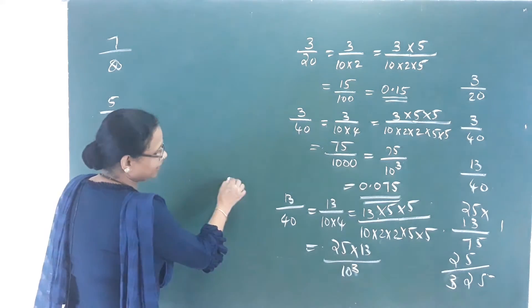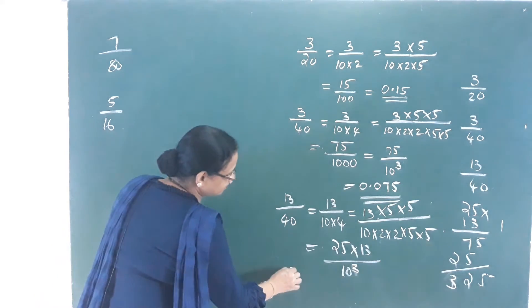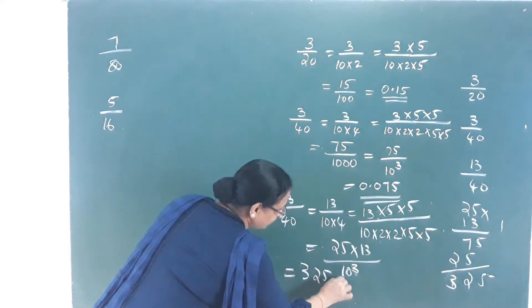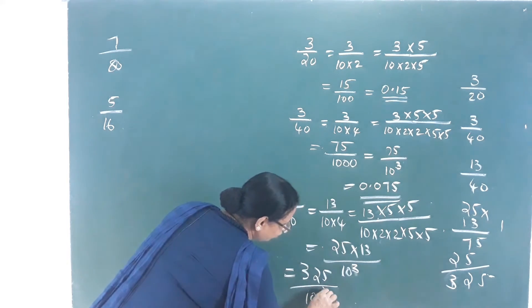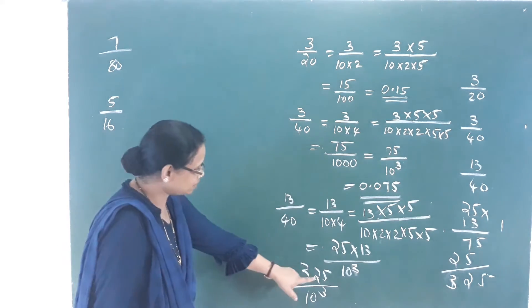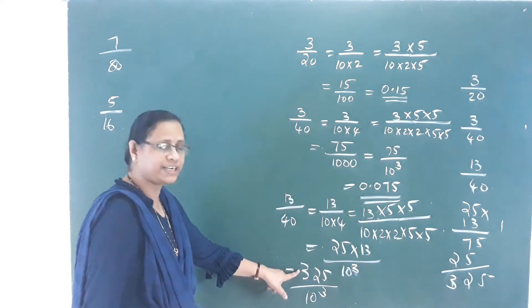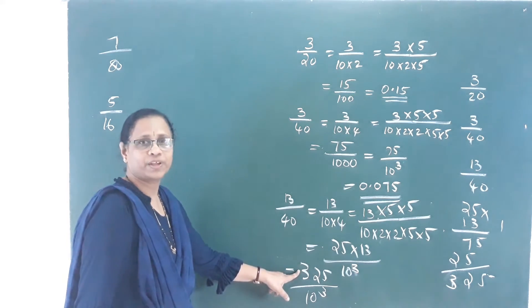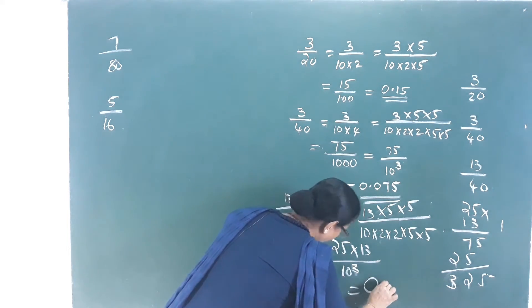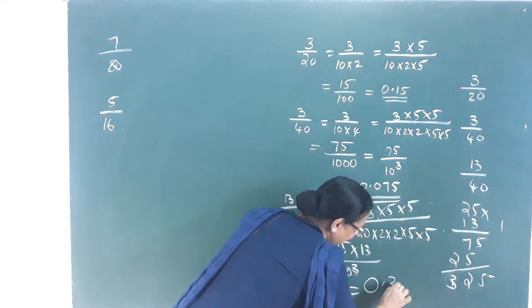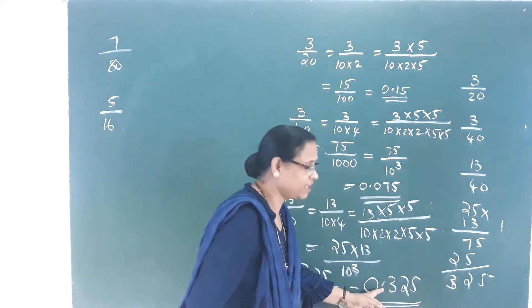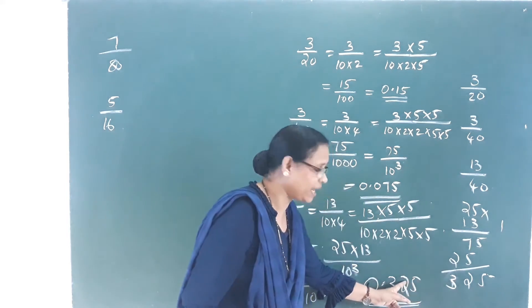325 divided by 10 cubed — that means 3 decimal places. The answer is 0.325.